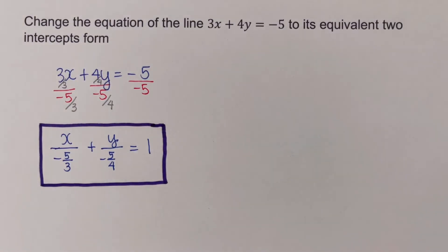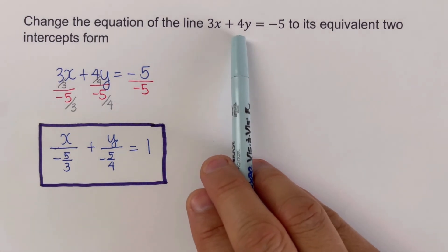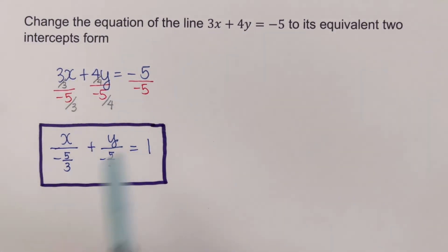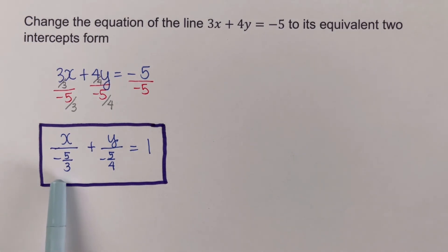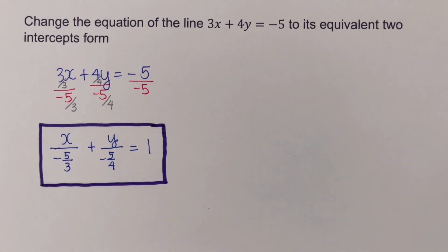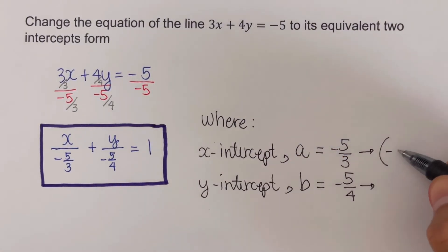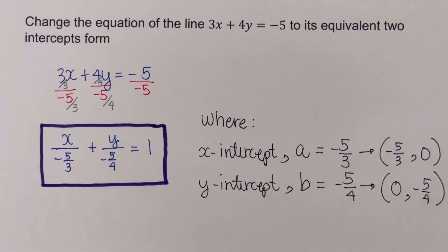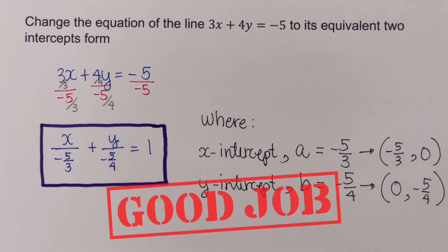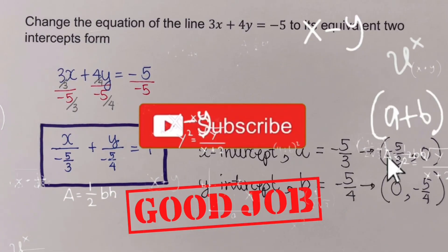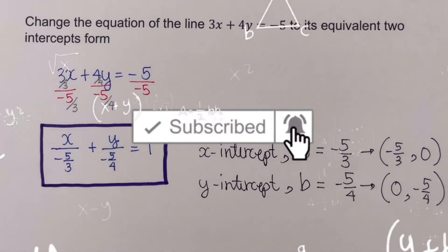This gives us the equivalent two-intercepts form, where the x-intercept is −5/3 and the y-intercept is −5/4. The x-intercept coordinate is (−5/3, 0) and the y-intercept coordinate is (0, −5/4). If you found this video helpful, hit like and subscribe for more math videos. See ya!